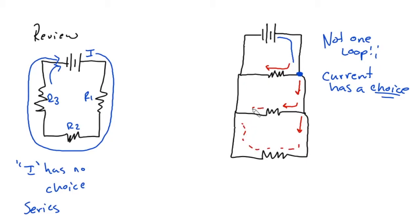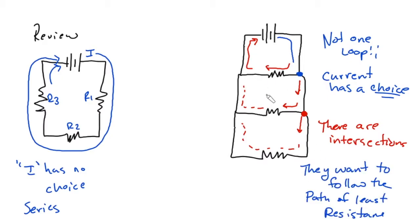All the way around until they all meet back up and come back to the battery. So in parallel there are intersections and the electrons are going to go to the path of least resistance. All right, so if this is R1 and it has less resistance than R2, then the current through here will be different than the current through R3.